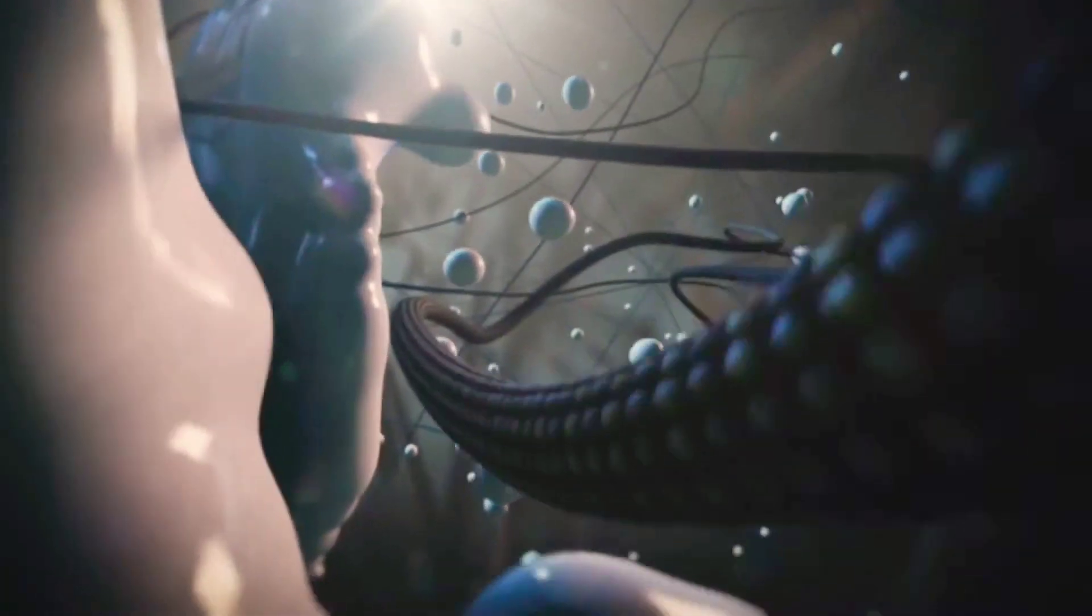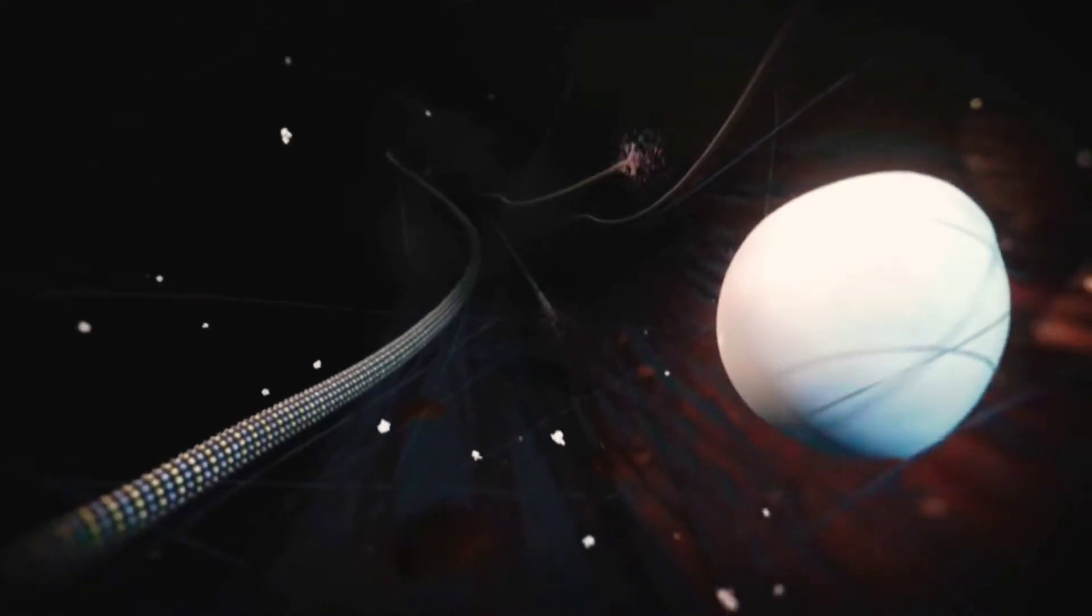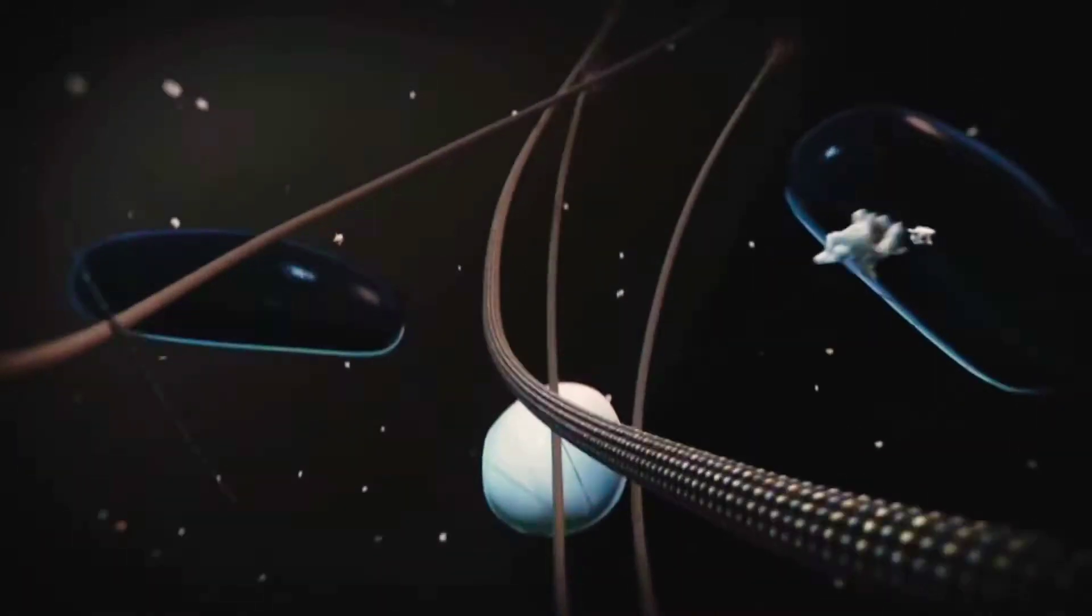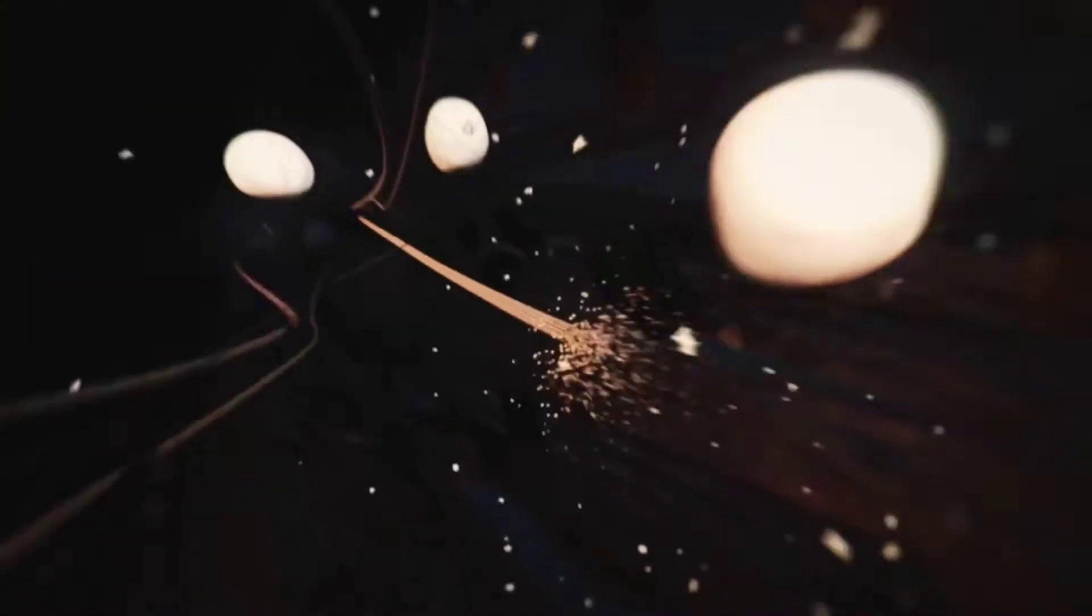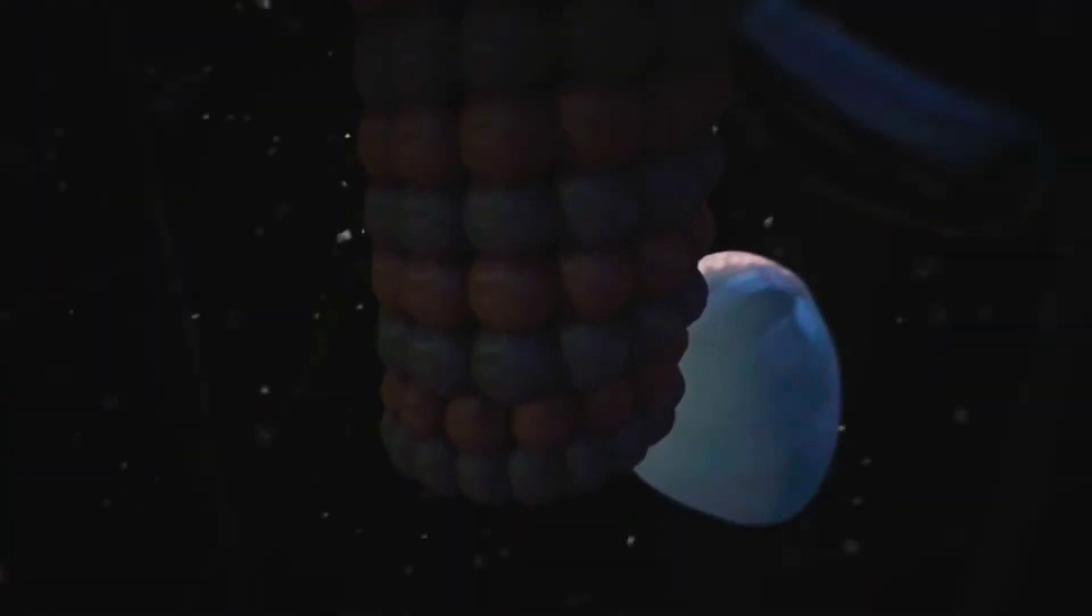The microtubule cytoskeleton is important for polarised cargo transport since it provides the roads for molecular motors. Microtubules built up from tubulin subunits are dynamic structures with a fast-growing and shrinking plus end and a more stable minus end.